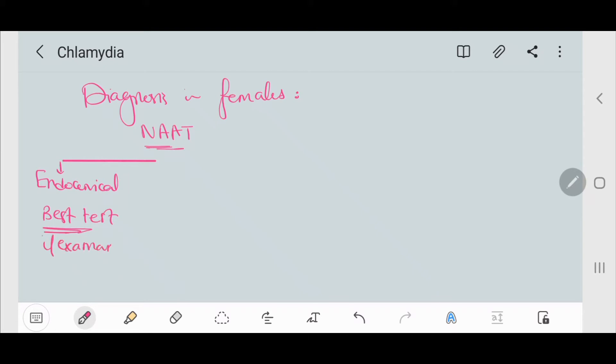The second way is a self-collected vaginal swab, and that can be done if the patient is not examined.